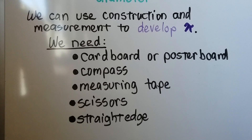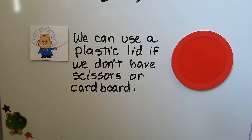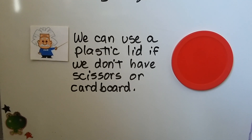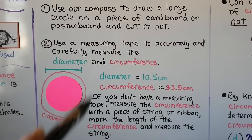We're going to be cutting out a circle on the cardboard or poster board using our compass. And if you don't have those handy, we can use a plastic lid in place of the cardboard, scissors, and compass. The first thing we're going to do is use our compass to draw a large circle on a piece of cardboard or poster board and cut it out.